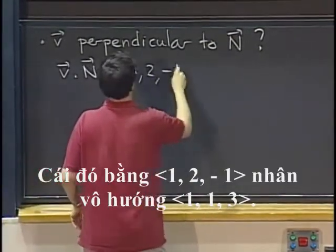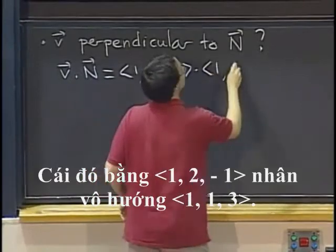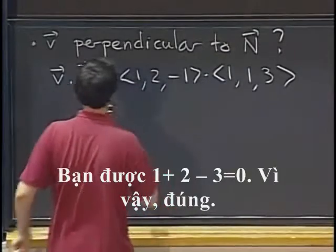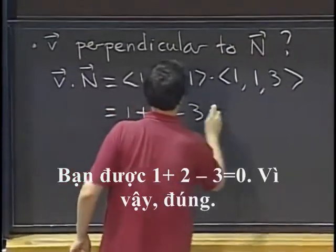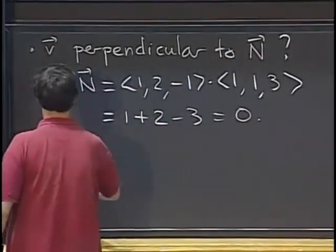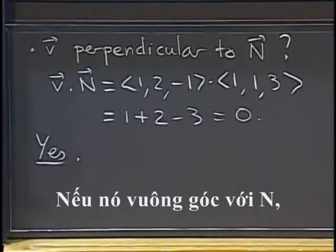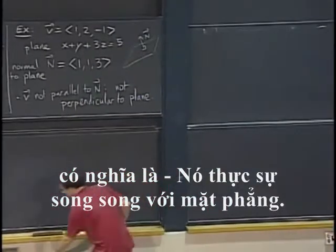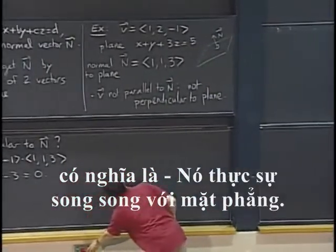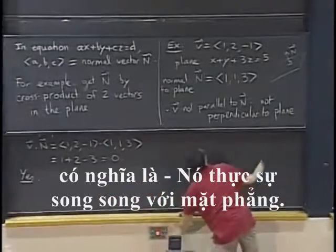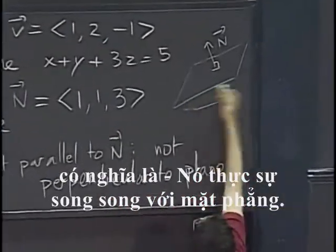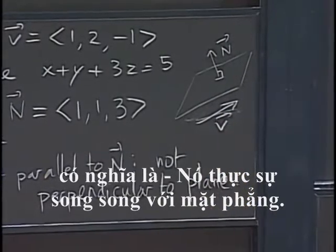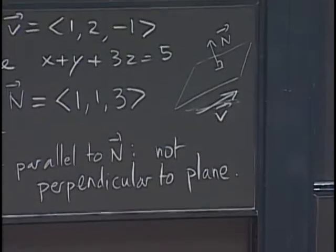That's 1, 2, negative 1 dot 1, 1, 3. If you get 1 plus 2 minus 3, that's 0. So, yes. So, if it's perpendicular to n, it means maybe it's somewhere like that. It's actually going to be parallel to the plane. OK?